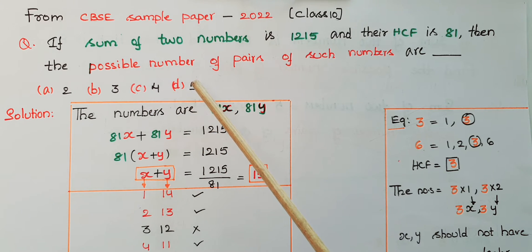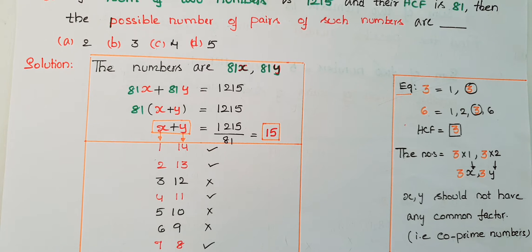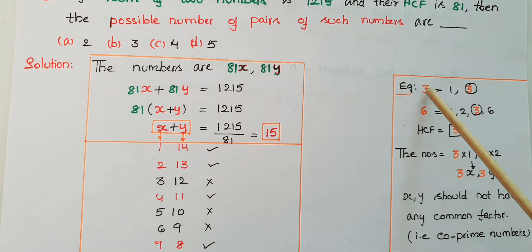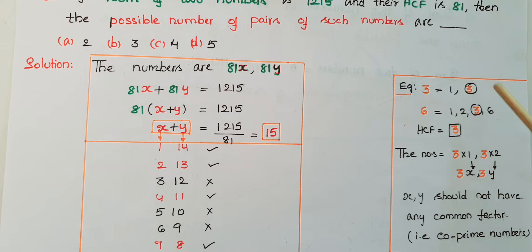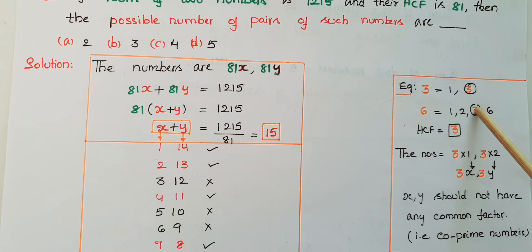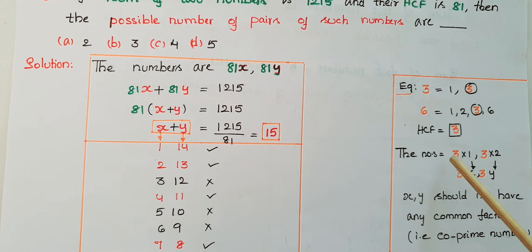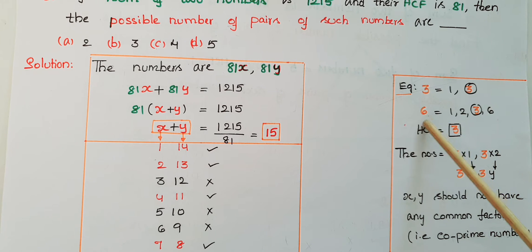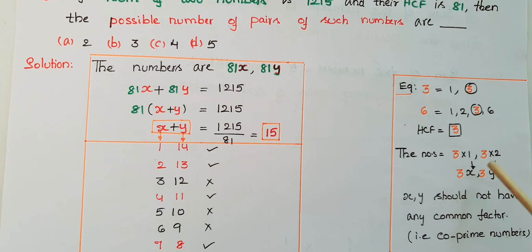Here HCF is the highest common factor of two numbers. For example, take 3 and 6 — the factors of 3 are 1 and 3, and the factors of 6 are 1, 2, 3, and 6. So 3 is the common factor and this is the highest common factor — HCF of 3 and 6 is 3. So we can write the numbers as 3×1 and 3×2, which are 3 and 6.